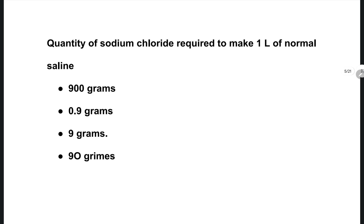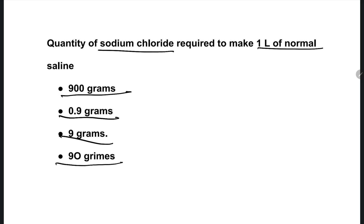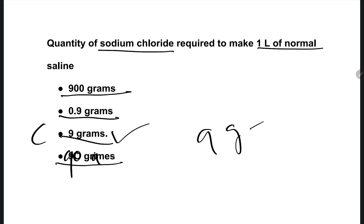The next question: what quantity of sodium chloride is required to make one liter of normal saline? Options are: 900 grams, 0.9 grams, 9 grams, 90 grams. Option C is the right one — 9 grams is needed to make one liter of normal saline.